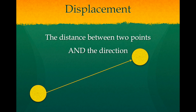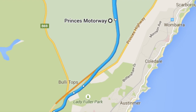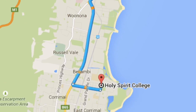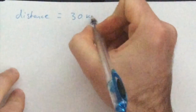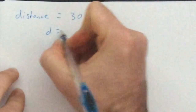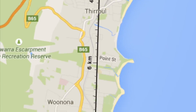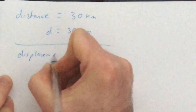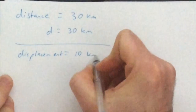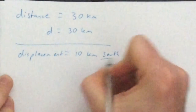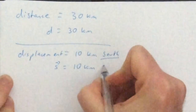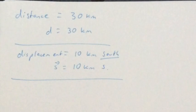So let's look at an example. I drive 30 kilometres each day from my house to school. This is the distance that I travel. However, the school is only 10 kilometres south of my house, so my displacement is 10 kilometres south. Note that it has direction — south — as well as the magnitude — 10 kilometres.